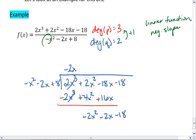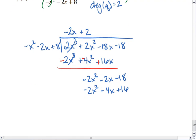We then want to multiply by positive 2. Positive 2 times negative x squared is minus 2x squared. We get minus 4x plus 16. Subtract, which changes all the signs.